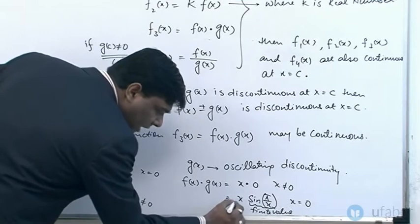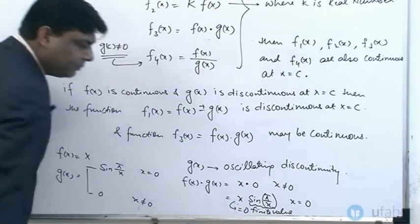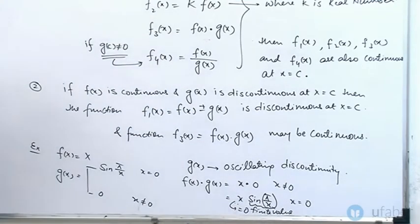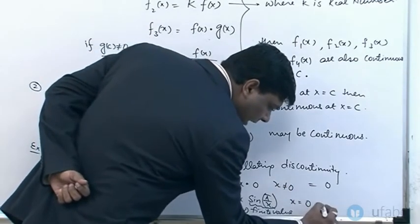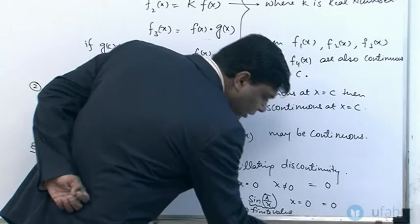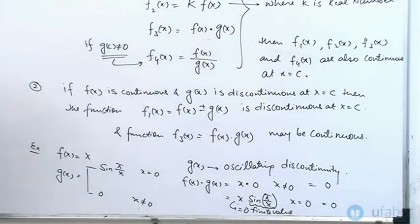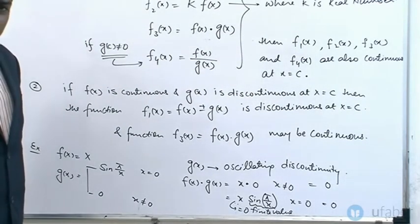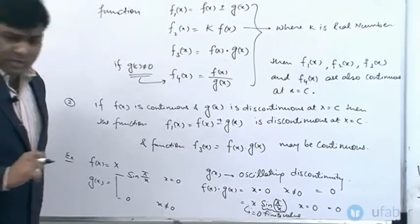That means at x equal to 0, it will always come out to be 0. So in that case, f(x)·g(x) will always be equal to 0, and the product will also equal 0. We are saying sin(π/x) is oscillating, but it always lies between minus 1 and 1.